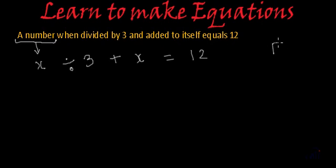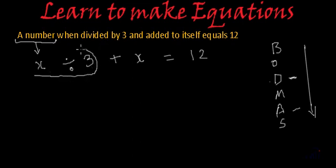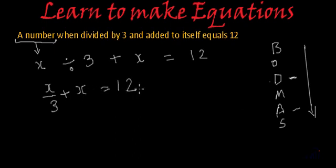So again we will follow BODMAS. Here division comes before addition. This is the order of the priority in which we solve our expressions. So in this, division comes before addition. So we have to do this part of the expression first. So it will become x by 3 plus x equal to 12.